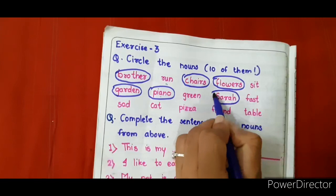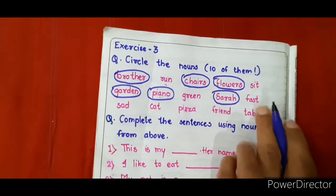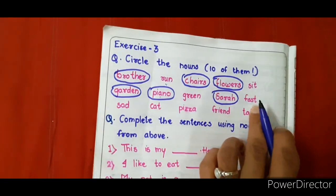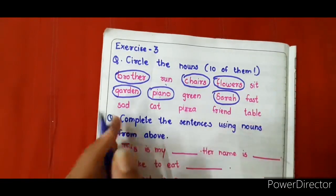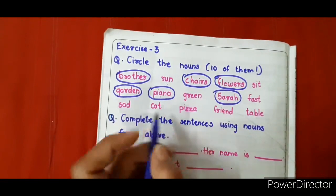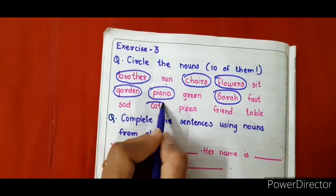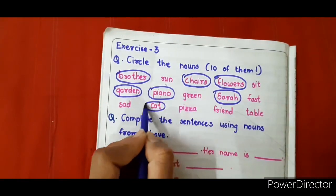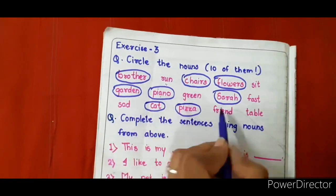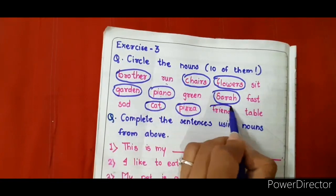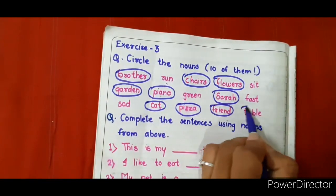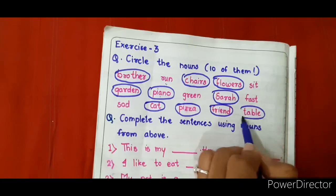Saraha is a noun. Fast: no, it is not a noun. Sad: no, it is also not a noun. Cat is a noun. Pizza is a noun. Friend is also a noun. And table is a noun.